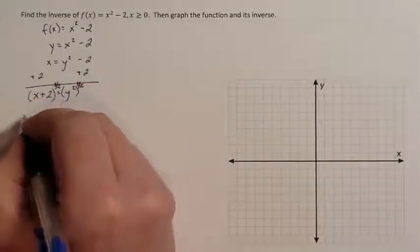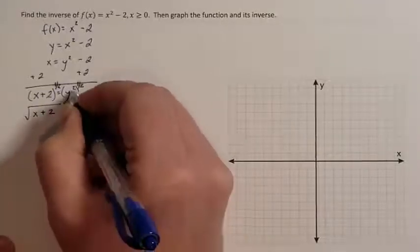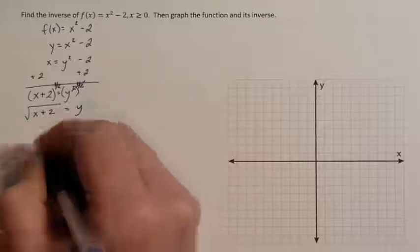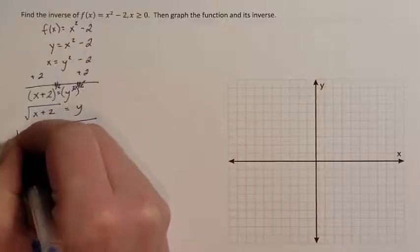Raising to the 1 half is the same thing as taking the square root of that entire side. These multiply together give me 1 so I just have y. So my g of x function is the square root of x plus 2.